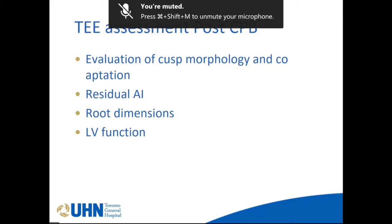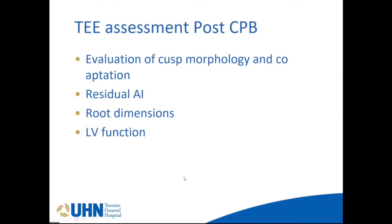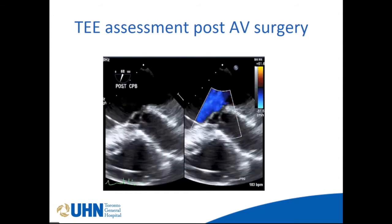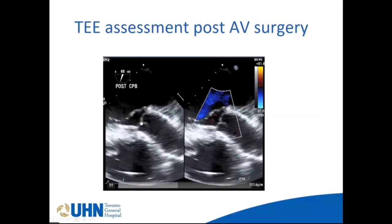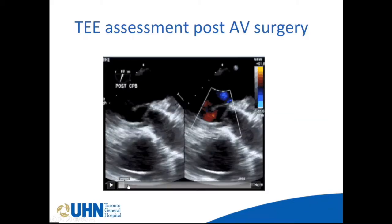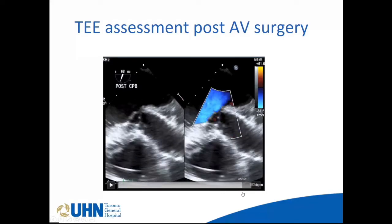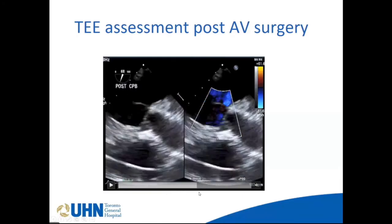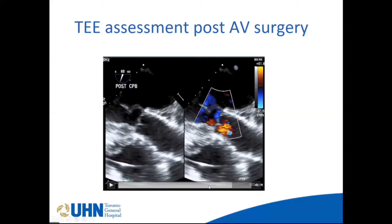Post-CPB assessment after aortic valve repair surgery: number one, evaluation of cusp morphology and coaptation; number two, residual AI; number three, root dimensions; number four, LV function — because the coronary buttons are reimplanted into the graft. The cusp coaptation looks nice, AI is minimal to none, and then we assess LV function. The important things to look for are the coaptation length and coaptation height, which I'll show in the next few minutes.